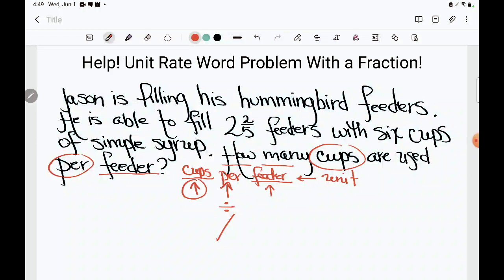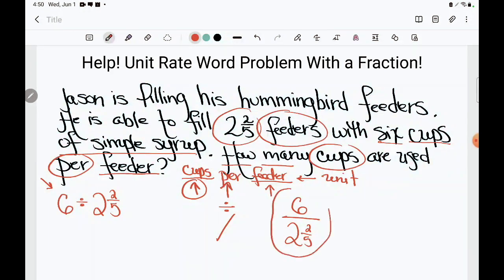Now I know exactly what to do. Don't get distracted by the order it shows up in the problem. Look at what you're looking for: cups per feeder. So we're going to start with the cups. How many cups did he have of this simple syrup? He had 6. And now we're going to per, we're going to divide that. Now I don't care if you write the divide this way or you write it that way, but you'll probably be less confused if we do it this way. Because now we need the number of feeders, and he has 2 2/5 feeders. So 6 divided by 2 2/5.